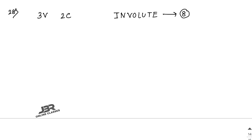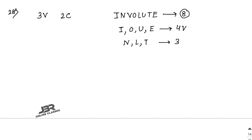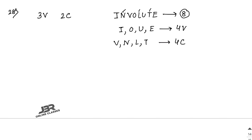We separate vowels and consonants. Vowels are I, O, U, E — wait, let me check: in VIOLET the vowels are I, O, I, E — that gives 4 vowels. Consonants are V, N, L, T — that is 4 consonants. So we have 4 vowels and 4 consonants.